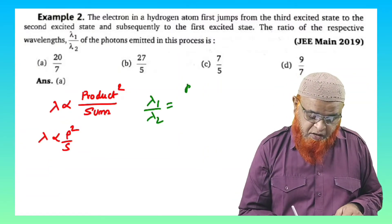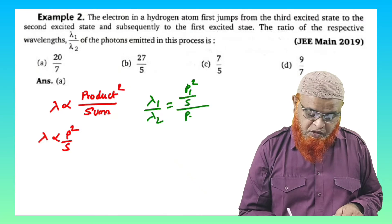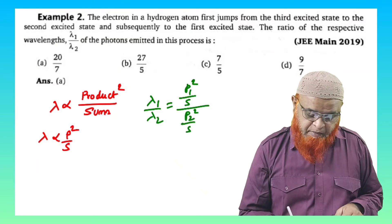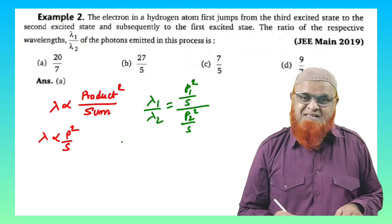Lambda 1 by lambda 2 is equal to product 1 whole square by sum divided by product 2 whole square by sum.